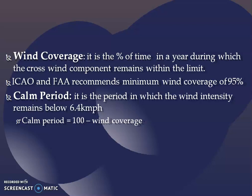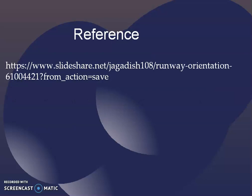Our agency recommends a minimum wind coverage of only 95%. Then what is a calm period? When the wind intensity is very low, that is 100 minus the wind coverage. Wind coverage is almost 95%, so 100 minus 95 gives you 5%. Then 5% will be the calm period.